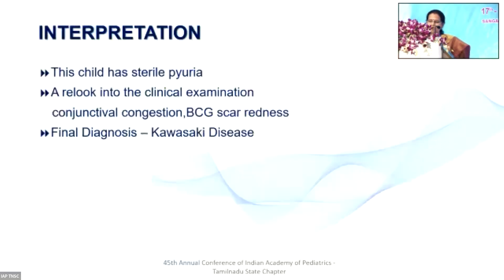The final diagnosis was Kawasaki disease. Many instances like this are treated as culture-negative UTI or urosepsis — the child improves because Kawasaki is self-limiting. But what about the coronary damage if it occurs? The child can have problems later on. Please never label these children as culture-negative UTI or urosepsis without a positive urine culture. Go back and look at the clinical findings, and you can even do an echo if you have doubt.